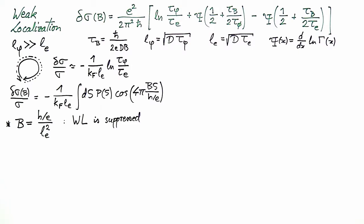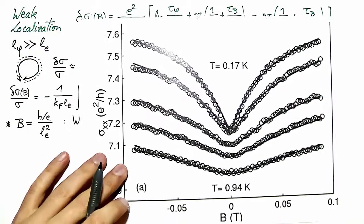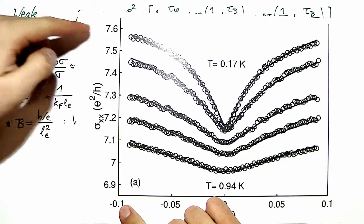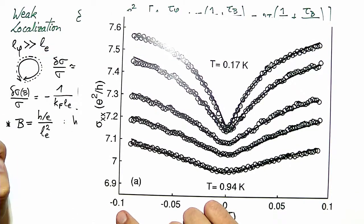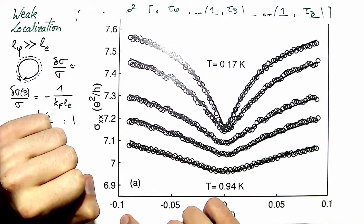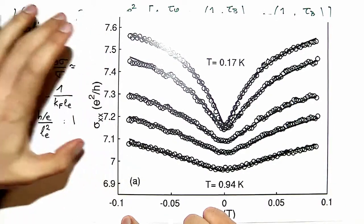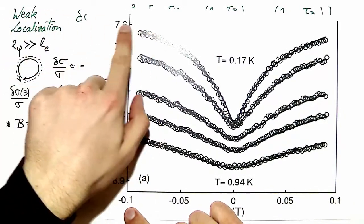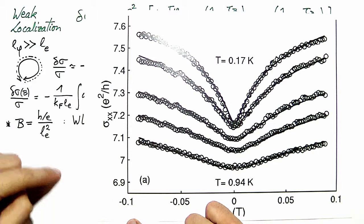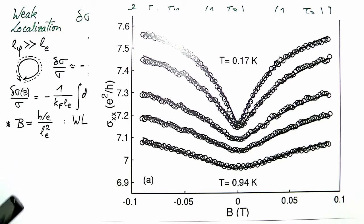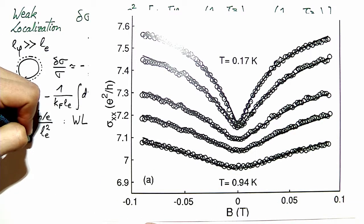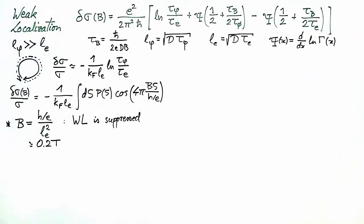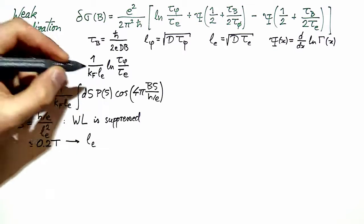We can now check whether we are able to recognize such a field scale in the data. Weak localization is suppressed when we essentially lose B-dependence, when the curve does not change much anymore as we increase field further. One could argue that such a field scale is outside the window given here, but if we extrapolate, fields of the order of 0.2 tesla seem to be where the contribution becomes negligible. Using 0.2 tesla as an estimate and solving for the elastic mean free path, we get an estimate of 140 nanometers.